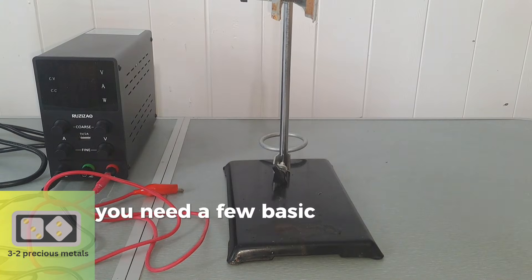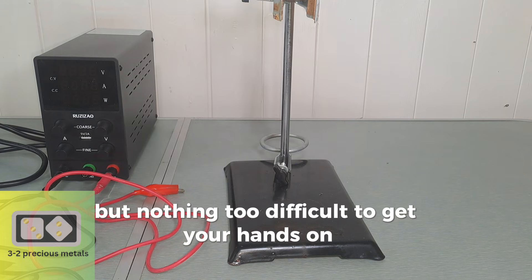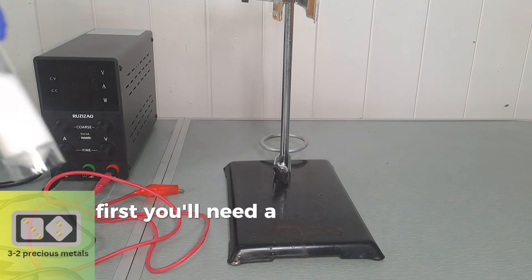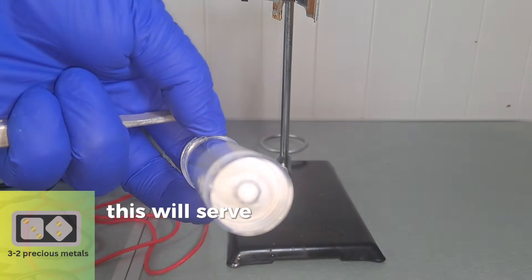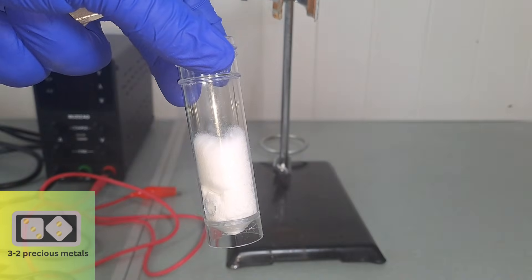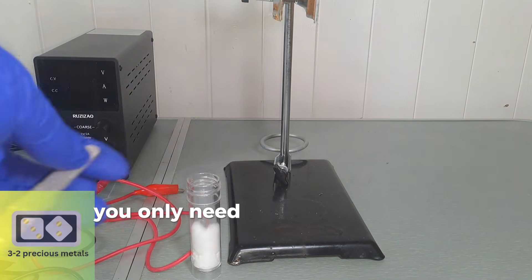You need a few basic pieces of equipment for this experiment, but nothing too difficult to get your hands on. First, you'll need a small plastic tub with a hole and a filter in. This will serve as your anode basket. I've actually used too much cotton in this filter. You only need enough to cover the hole.